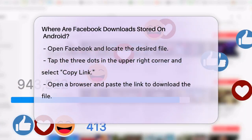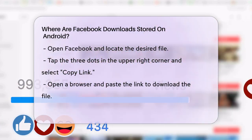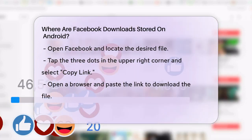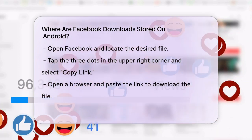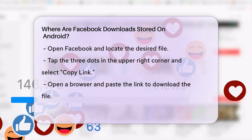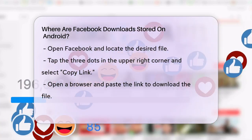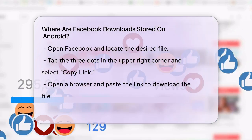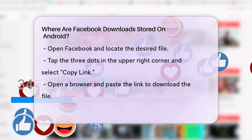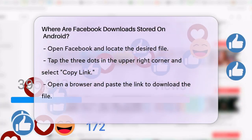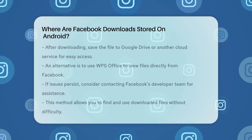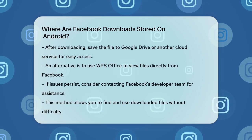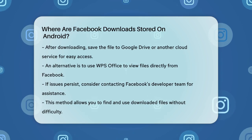Open your browser and paste the link to download the file. Once the file is downloaded, you can save it to your Google Drive or another cloud storage service to access it easily. Another option is to use an app like WPS Office to view the file directly from Facebook without having to download it.